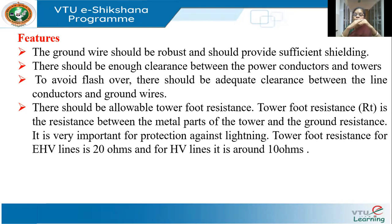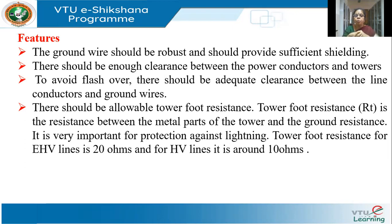Otherwise, you may have a flashover between the ground wire and the conductor, or between the ground wire and the tower. Sufficient clearance must be maintained so that there is no arc. There should also be allowable tower foot resistance — that is, the resistance between the metal parts of the tower and the ground. This is very important for lightning protection. Normally, the tower foot resistance for HV lines is around 20 ohms and for EHV lines it is around 10 ohms.